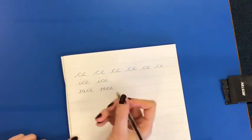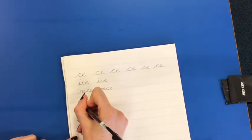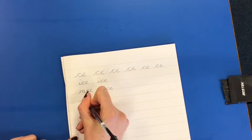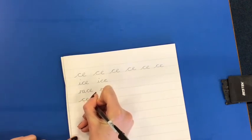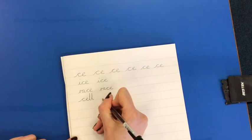And the last word we're going to try is cell. So here we go starting on the line for my c, curling round, joining my e, and we've got two tall l's. Make sure your tall letters are much taller than these smaller ones here. Try it again.